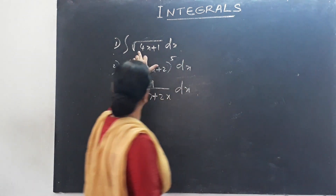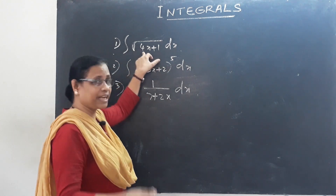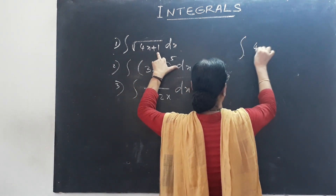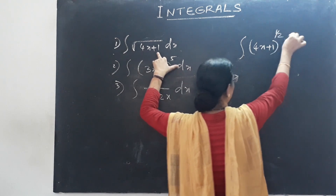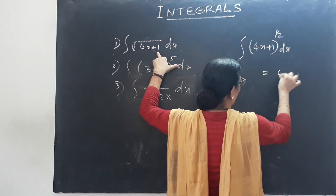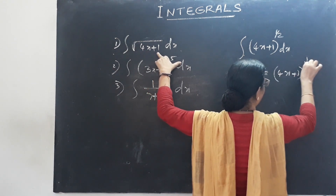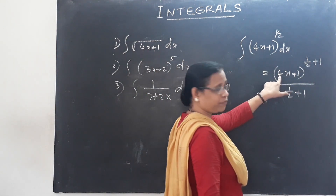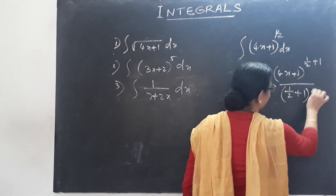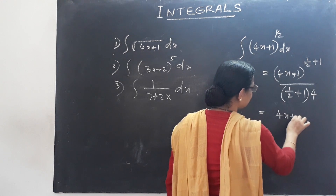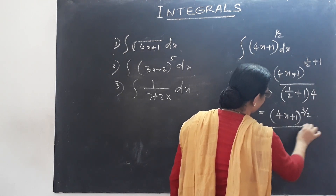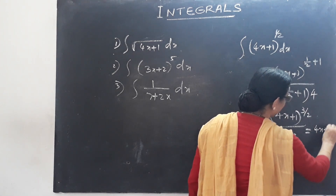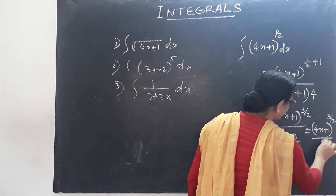In the second method, consider the root of (4x+1), which is a linear function. We write it as (4x+1)^(1/2). Integrating: (4x+1)^(1/2+1) divided by (1/2+1) into 4, the coefficient of x. That gives (4x+1)^(3/2) divided by (3/2 × 4) = 6, so the answer is (4x+1)^(3/2) / 6 plus c.